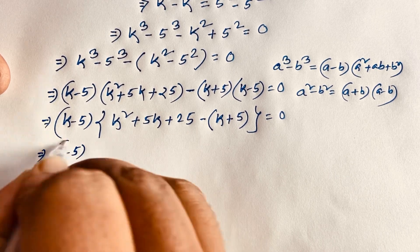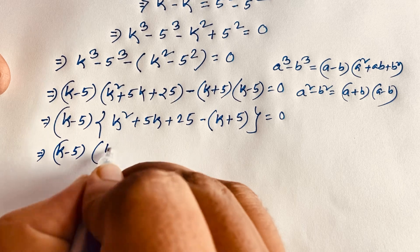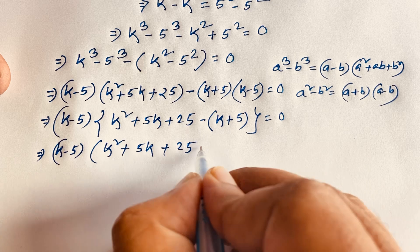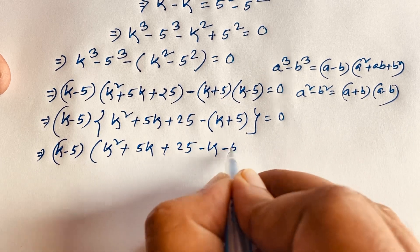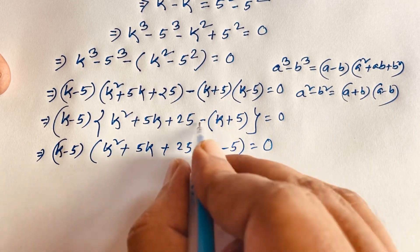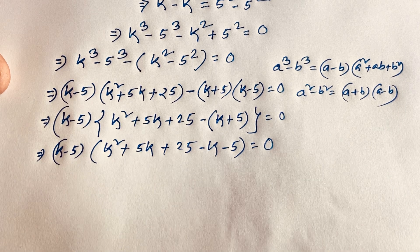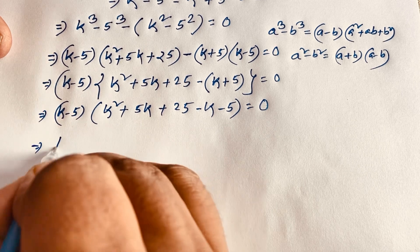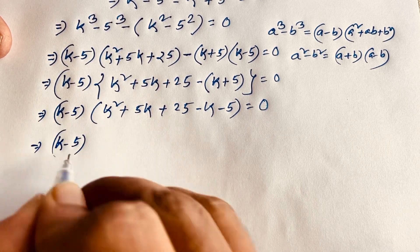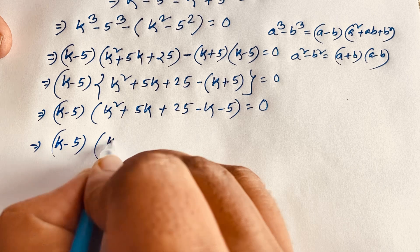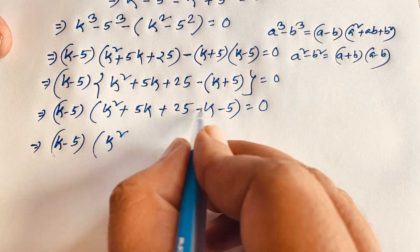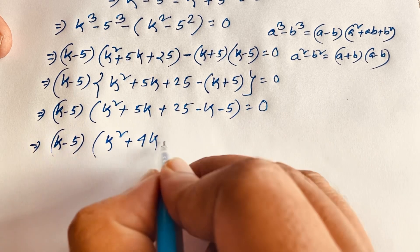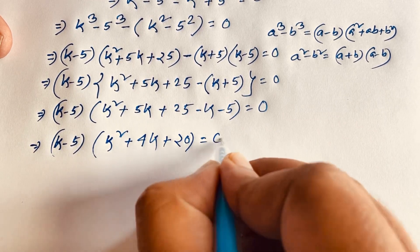So we find (k - 5) times (k² + 5k + 25 - k - 5) equals 0. Simplifying: 5k minus k is 4k, and 25 minus 5 is 20. So it becomes (k - 5)(k² + 4k + 20) = 0.